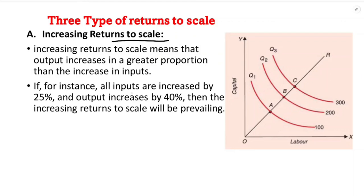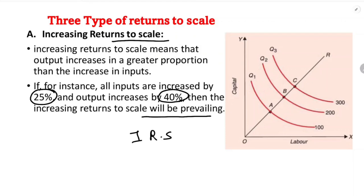Increasing returns to scale means that output increases in a greater proportion than the increase in input. For instance, if all inputs are increased by 25 percent and output increases by 40 percent, then increasing returns to scale will be prevailing.